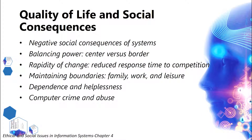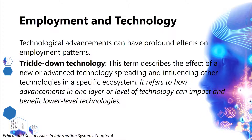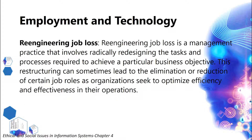Negative social consequences of systems include: balancing power between center and border; rapidity of change and reduced response time to competition; maintaining boundaries between family, work, and leisure; dependence and helplessness; computer crime and abuse; and employment and technology. Technological advancements can have profound effects on employment patterns. Trickle-down technology describes the effect of a new or advanced technology spreading and influencing other technologies in a specific ecosystem — how advancements in one layer of technology can impact and benefit lower-level technologies. Re-engineering job loss is a management practice that involves radically redesigning the tasks and processes required to achieve a particular business objective, which can sometimes lead to the elimination or reduction of certain job roles as organizations seek to optimize efficiency and effectiveness.